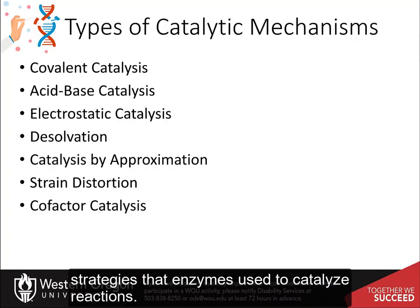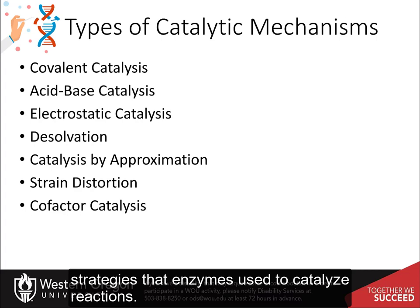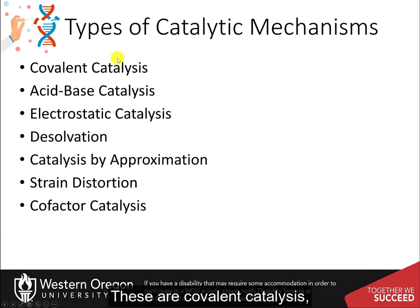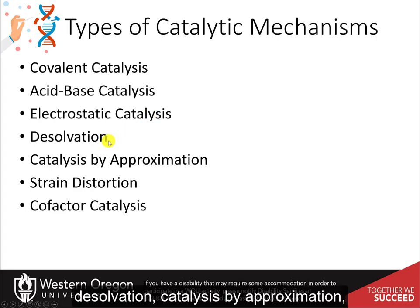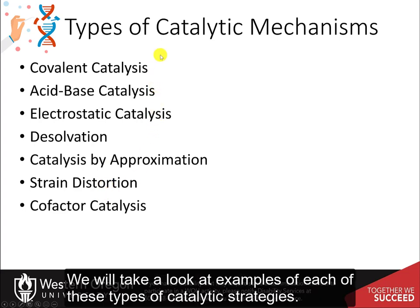There are seven major catalytic strategies that enzymes use to catalyze reactions. These are covalent catalysis, acid-base catalysis, electrostatic catalysis, desolvation, catalysis by approximation, strain distortion, and cofactor catalysis. We will take a look at examples of each of these types of catalytic strategies.